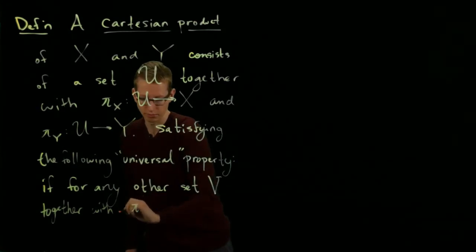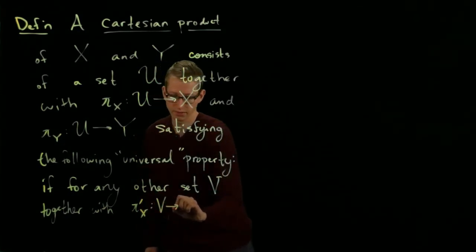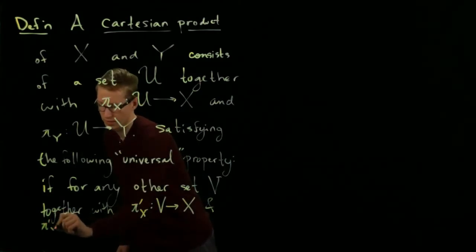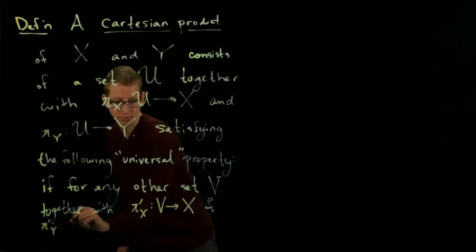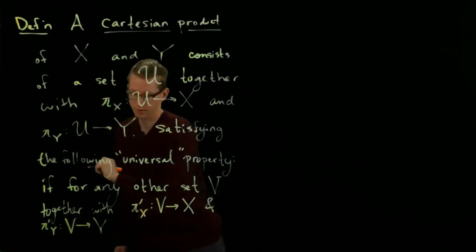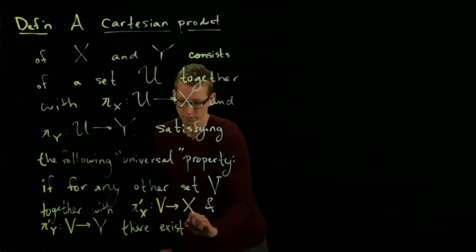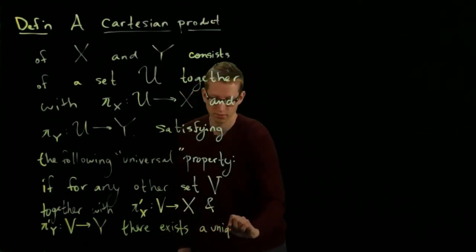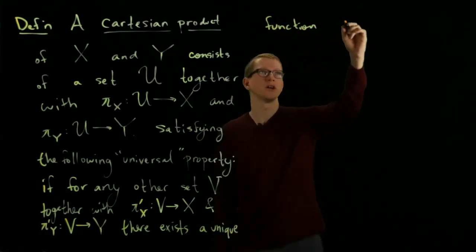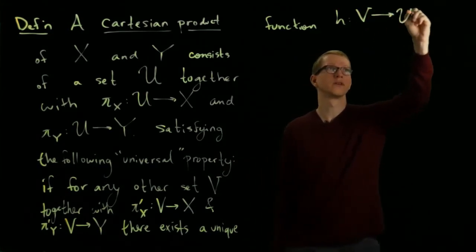Let's call them π'X from V to X and π'Y from V to Y. There exists a unique map, function H, from V to U such that the following diagram commutes.